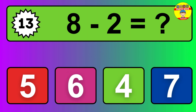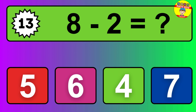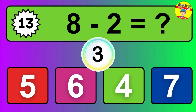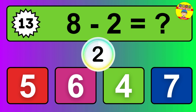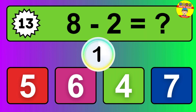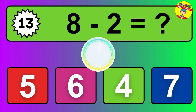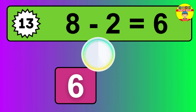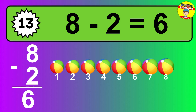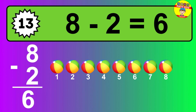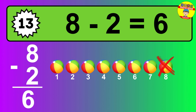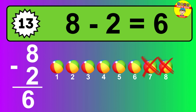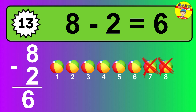Question 13. 8 minus 2 equals what? The answer is 8 minus 2 is 6. Let's count it: 1, 2, 3, 4, 5, 6.